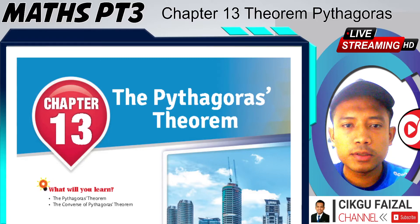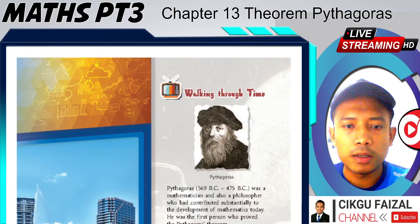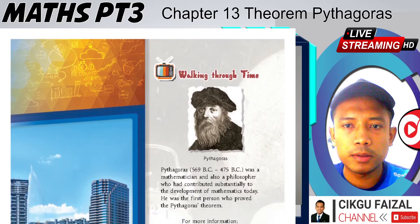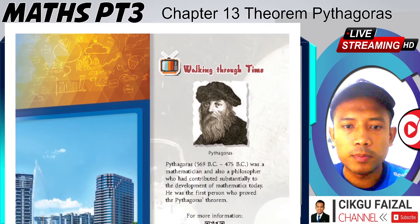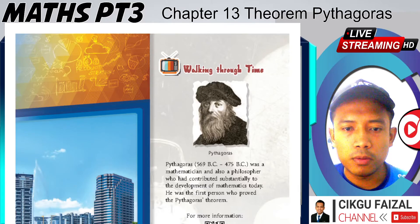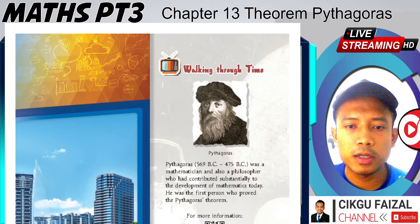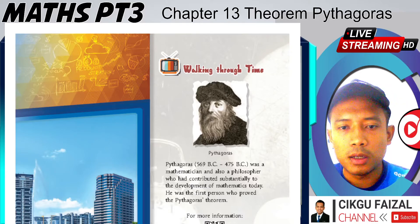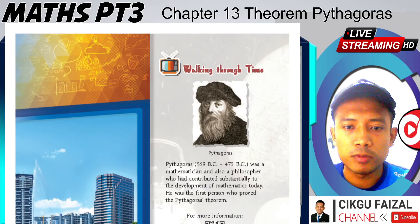Okay, as you look at the screen, this person is the one who discovered and built the theory of Pythagoras, within the years of 569 before Christ until around 475 before Christ.